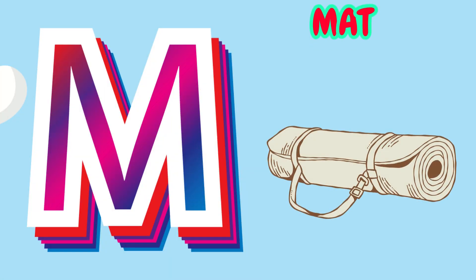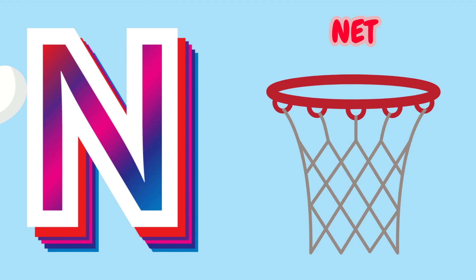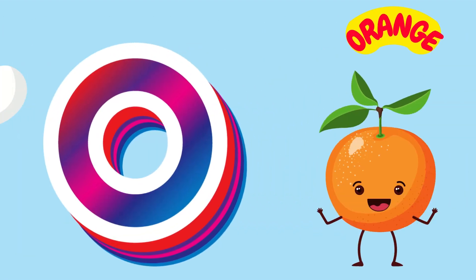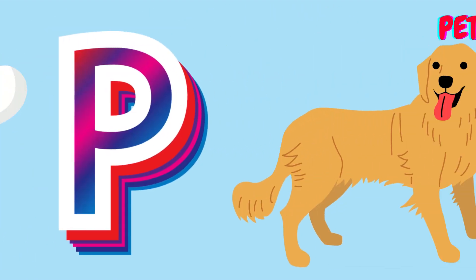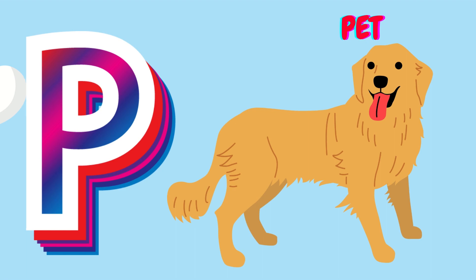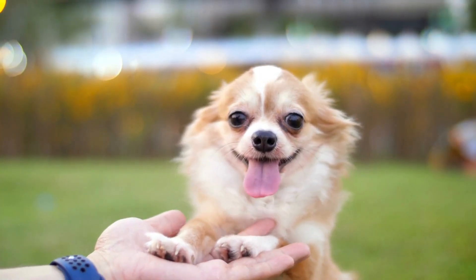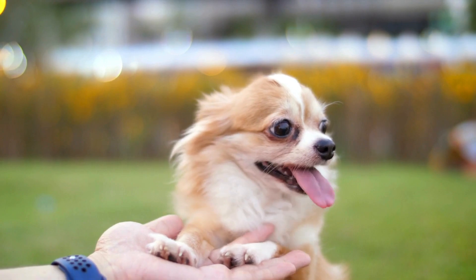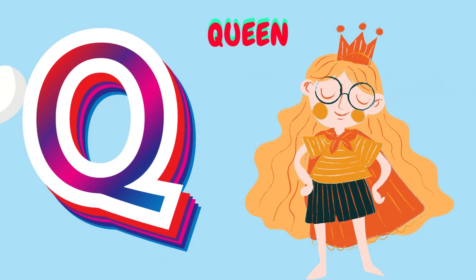M is for Mat. M-M-Mat. N is for Net. N-N-Net. O is for Orange. O-O-Orange. P is for Pet. P-P-Pet.